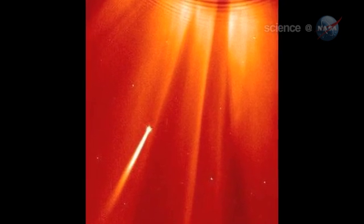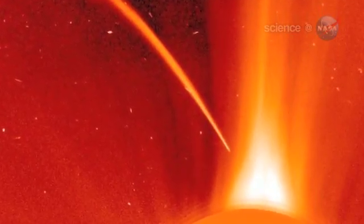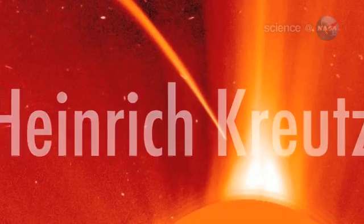Kreutz sungrazers are fragments from the breakup of a single giant comet many centuries ago. They get their name from 19th-century German astronomer Heinrich Kreutz, who studied them in detail.